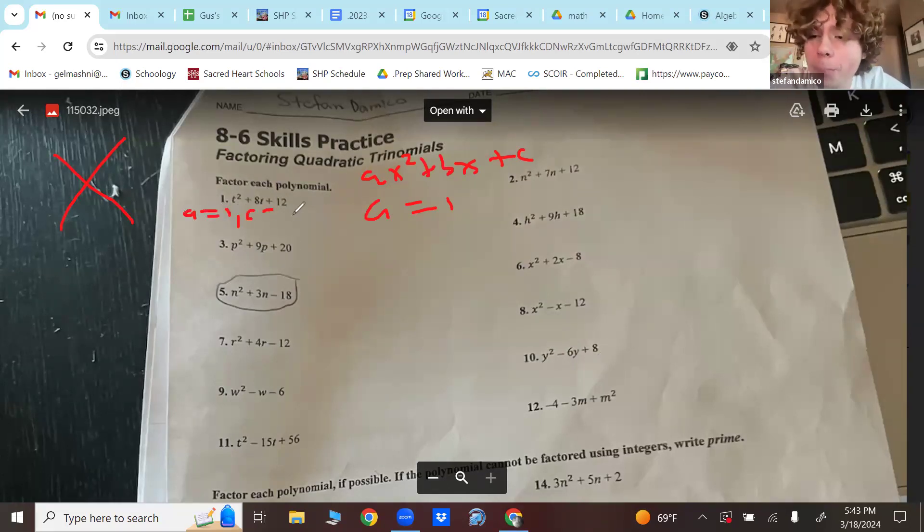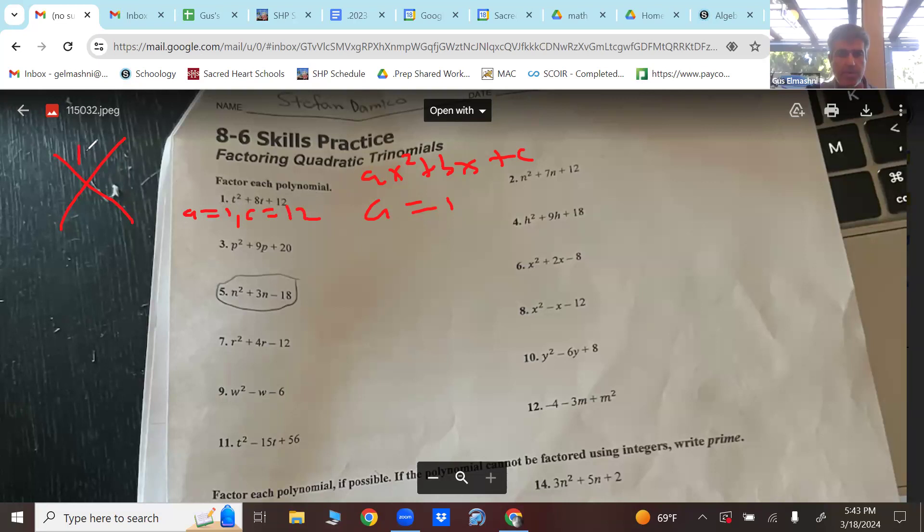C is going to be 12 for number 1. So you do a times c, which is 12. So you always put a times c at the top of the diamond. And you put b at the bottom. My b here is 8. Your job is to find two numbers that multiply a times c and add to b.